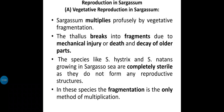Next is reproduction in Sargassum. Similar to other algae, we can see three different types of reproduction: first is vegetative, second is asexual, and third is sexual reproduction. First, vegetative reproduction — Sargassum multiplies profusely by vegetative fragmentation.